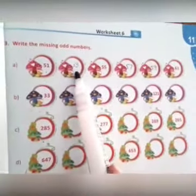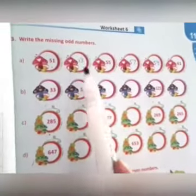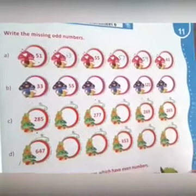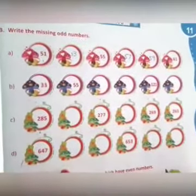On this page, you have the question: write the missing odd numbers. After 51, the digit which comes as an odd number is 53, then 55, 57, 59, and then 61. With this same concept, you have to do it again.